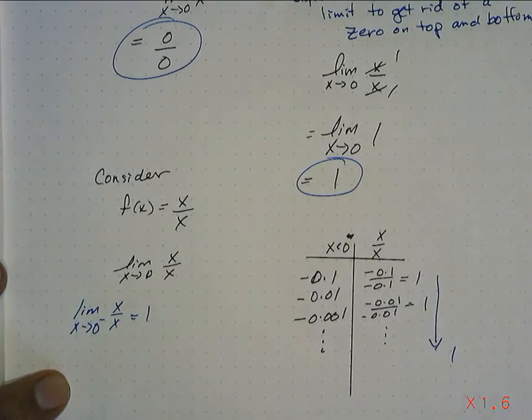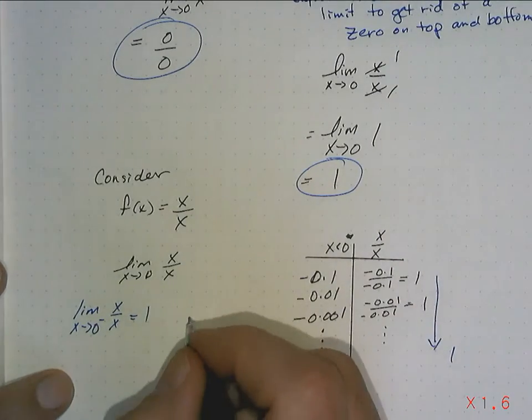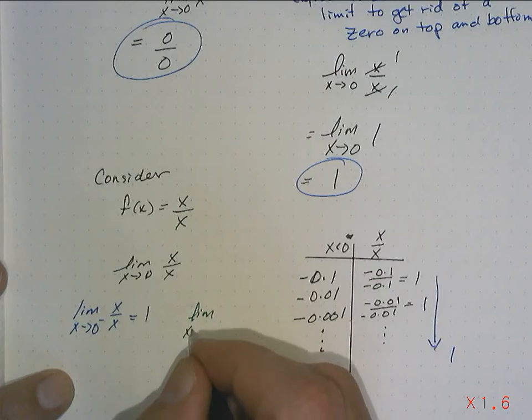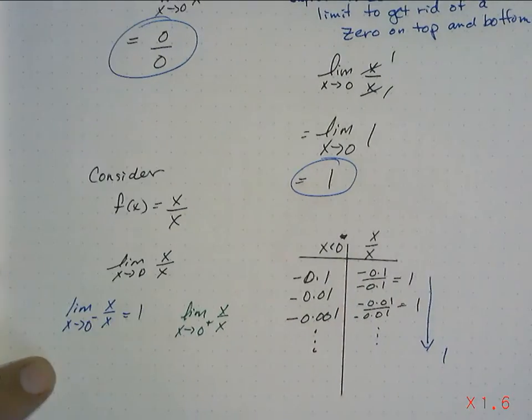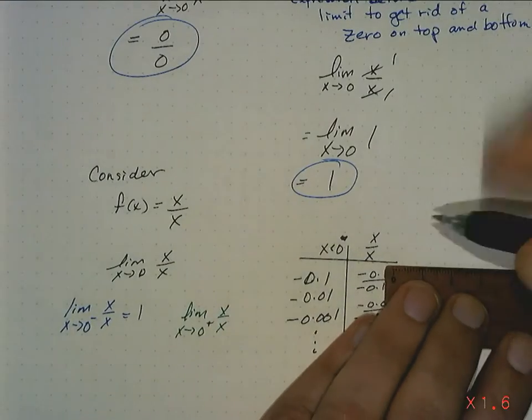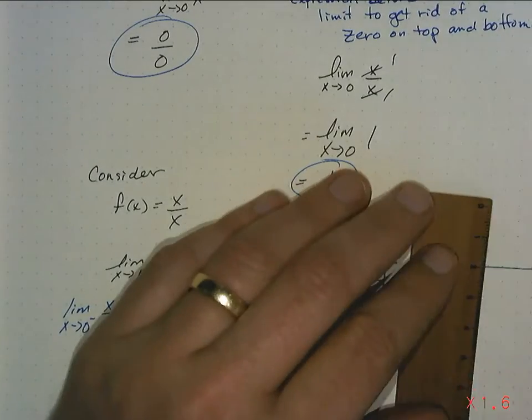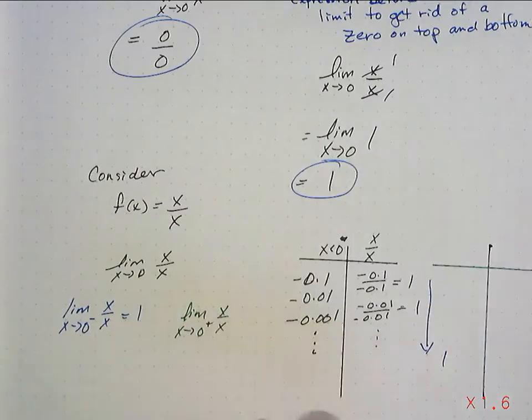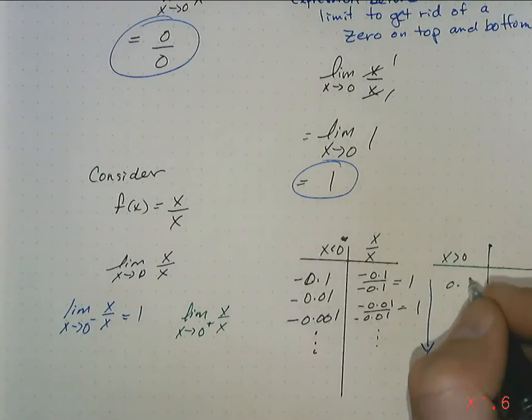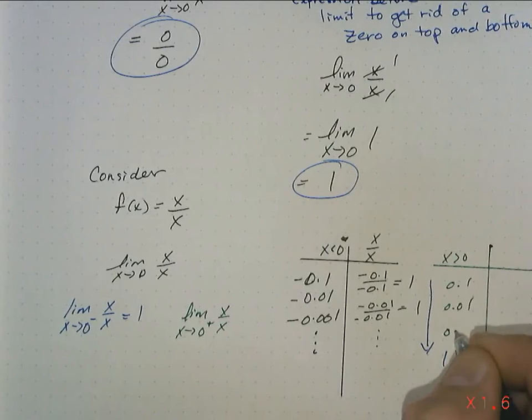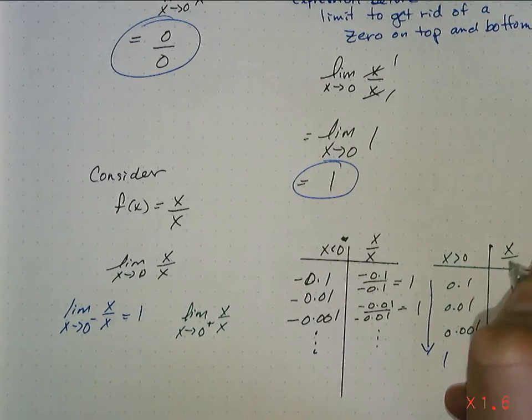Let's look at the right-hand limit. I'll do it in a different color. So the right-hand limit, x approaches 0 from the right of x over x. So again, using a table of values, I'm going to choose values of x that are greater than 0. So 0.1, 0.01, 0.001. And it's x over x.